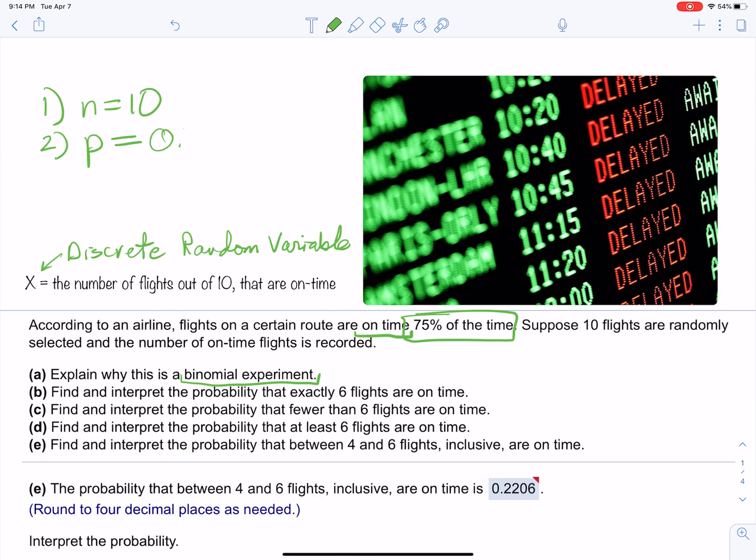Three: it's a binomial because it's yes or no—it's either on time or not. And then lastly, it's independent. That's the hardest one to check. Independence means that the probability of one outcome doesn't affect the next, and the number of flights is so large that with the sample size as small as 10, we can say that the selections were done independently.